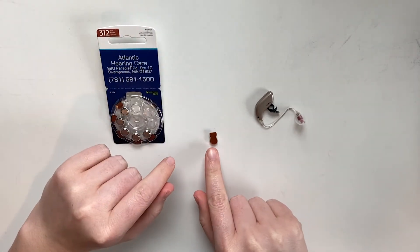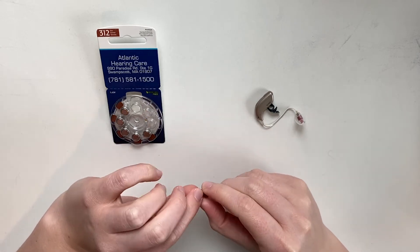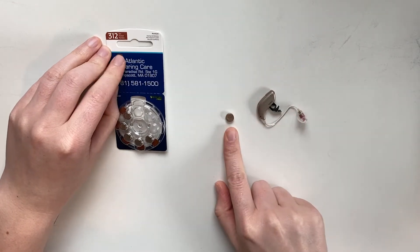In order to use the battery, we need to remove the sticker that comes on it. We're going to peel the sticker off. Now the battery is ready.